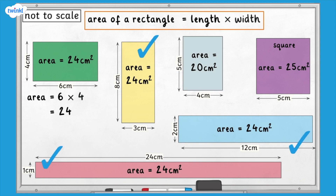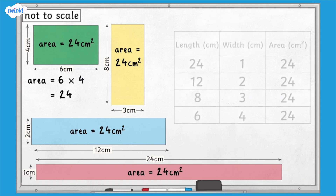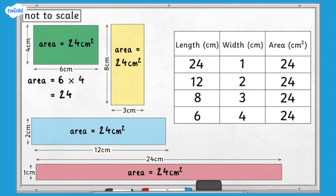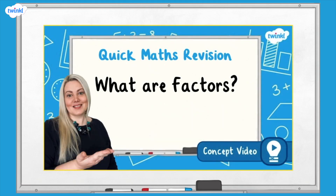Let's look again at the lengths and widths of the rectangles with the same area by putting them together in a table. We can see that the measurements of the rectangles with an area of 24 centimetres squared were all factor pairs of 24 — numbers that multiply together to make 24. If you need more help with factors, there is a What Are Factors video on the Twinkl website which goes through this in more detail.